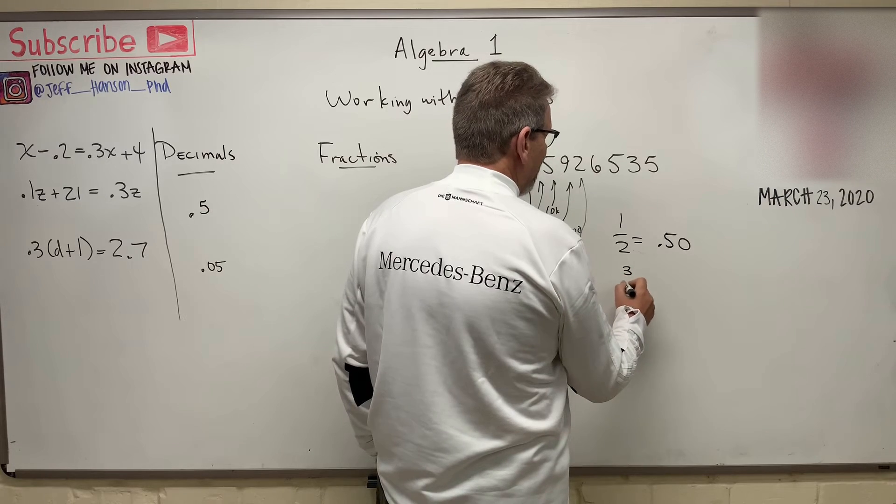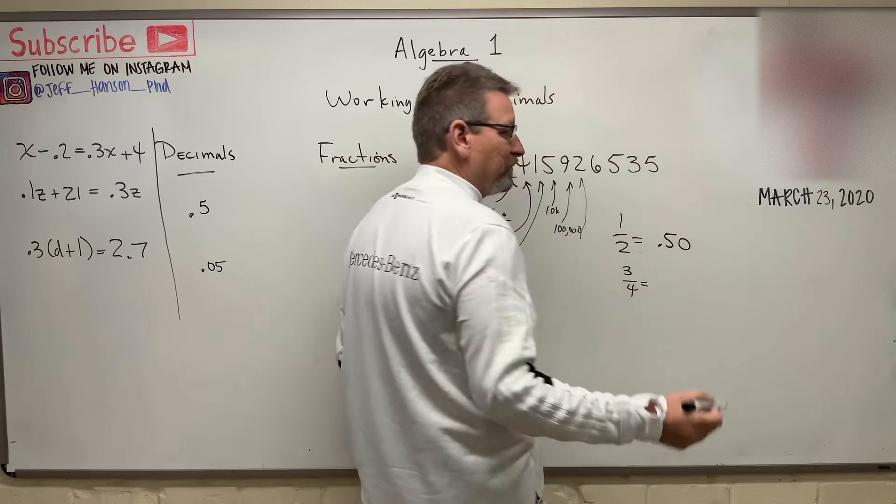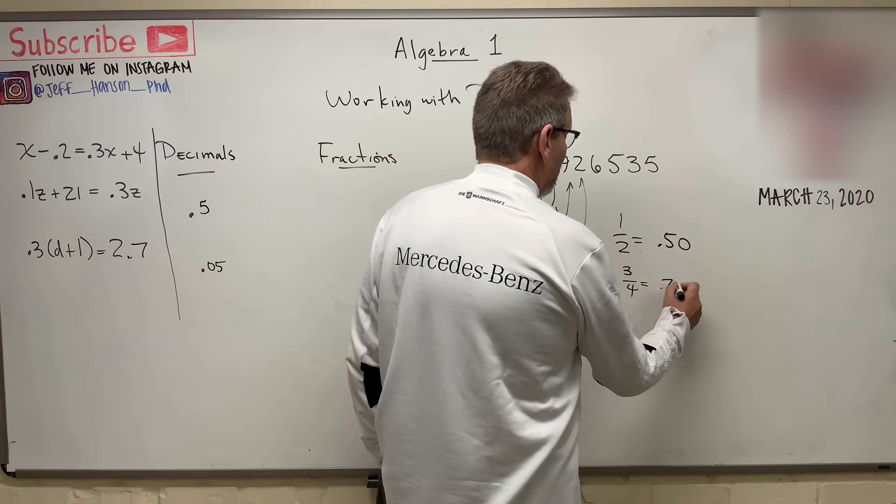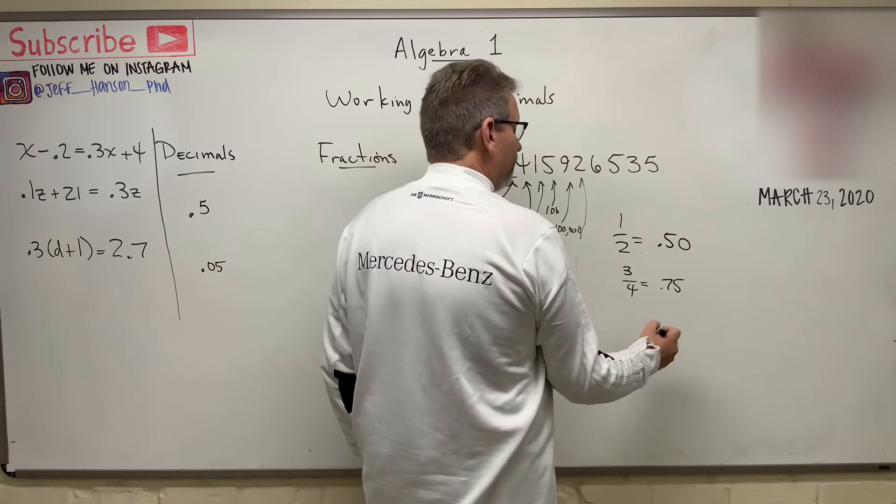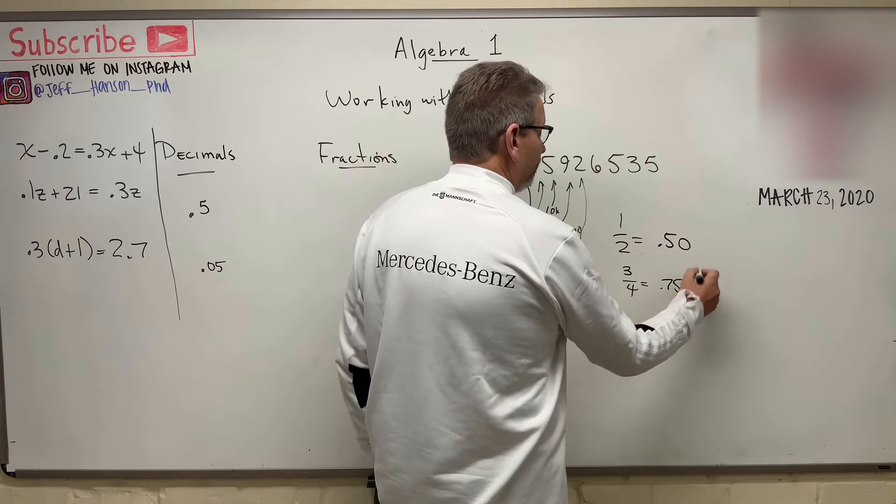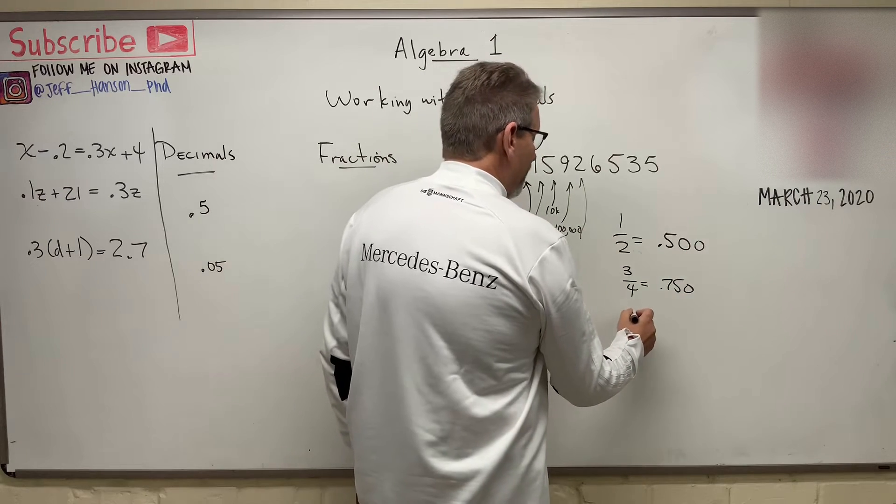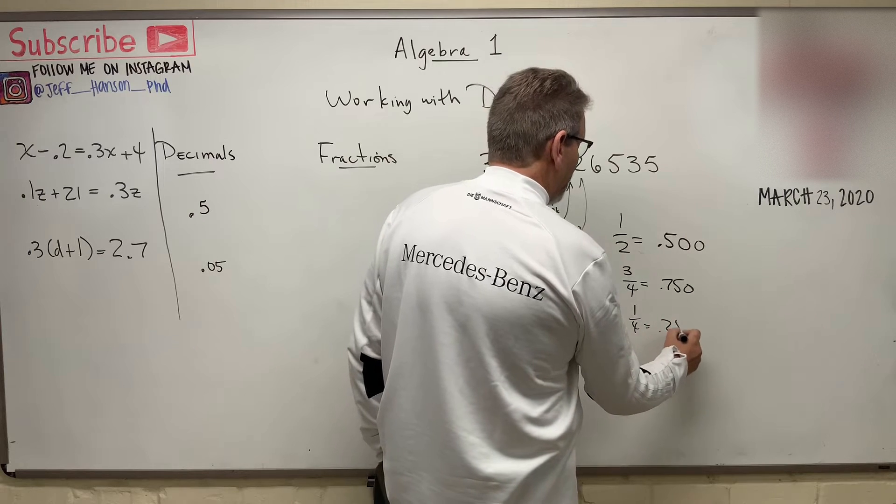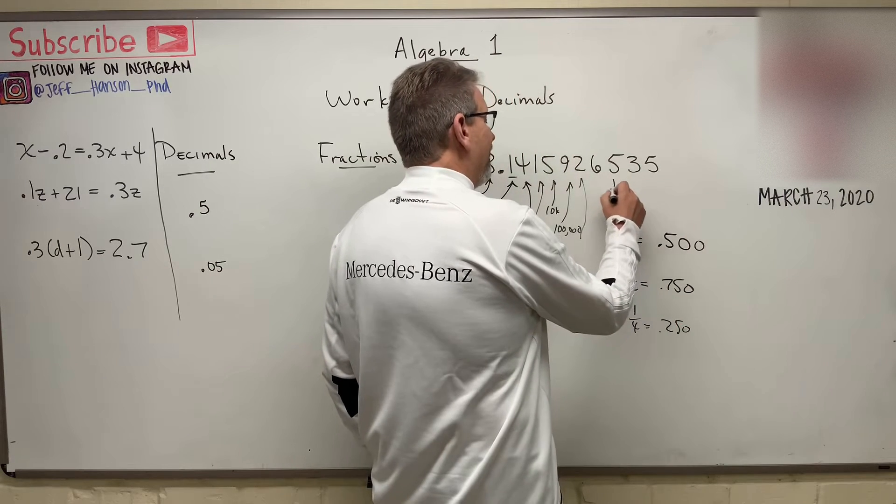A half is equal to in decimals what? Well, if you had half a dollar, how much would you have? 50 cents, right? Which is 0.50. But there's the tenths place, there's the hundredths place. Other ones that you should remember, something like this, three quarters. If you have three quarters, how many dollars do you have? It's 75 cents. So three quarters is 0.750. How about one quarter? Well, that's one quarter, 0.250.